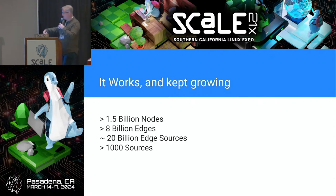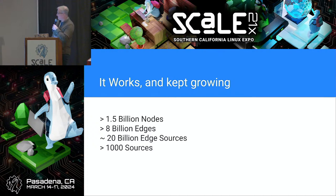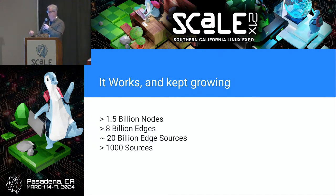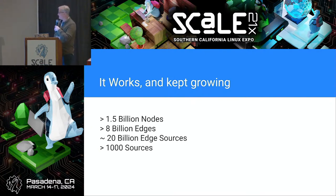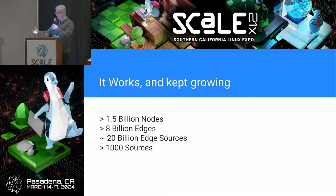And so it works and it keeps on going — it keeps on growing. At peak, it had about 1.5 billion nodes with about 8 billion edges and 20 billion sources for those 8 billion edges, and thousands of sources below that we're pulling data from, correlating and sifting to produce profiles.